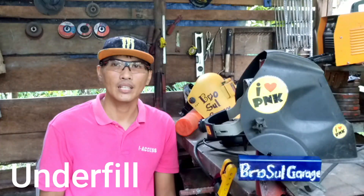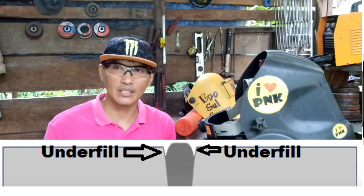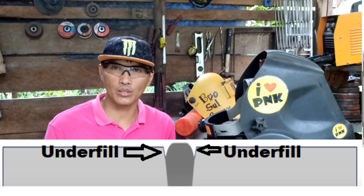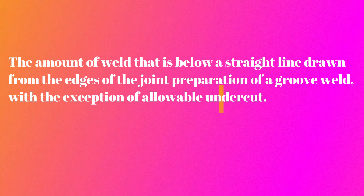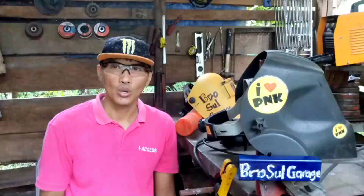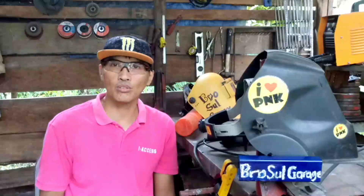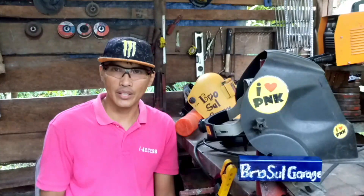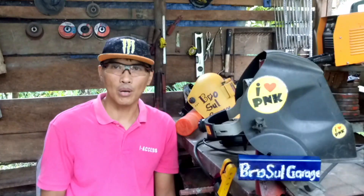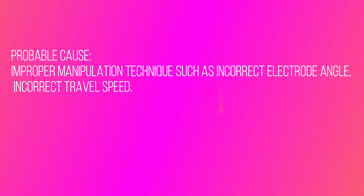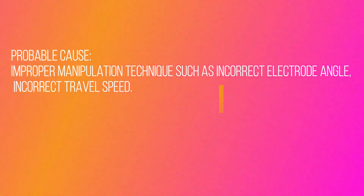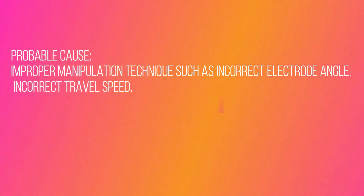Underfill: the amount of weld that is below a straight line drawn from the edges of a joint preparation of a groove weld, with the exception of allowable undercut. Probable causes include improper manipulation technique such as incorrect electrode angle and incorrect travel speed.